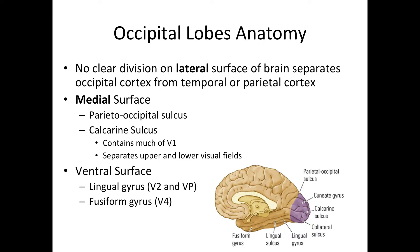This is why there's a lot of confusion about the exact boundaries on the lateral side. However, on each hemisphere's medial surface, the occipital lobe is distinguished from the parietal lobe by the parietal-occipital sulcus — the boundary between the two cortices.